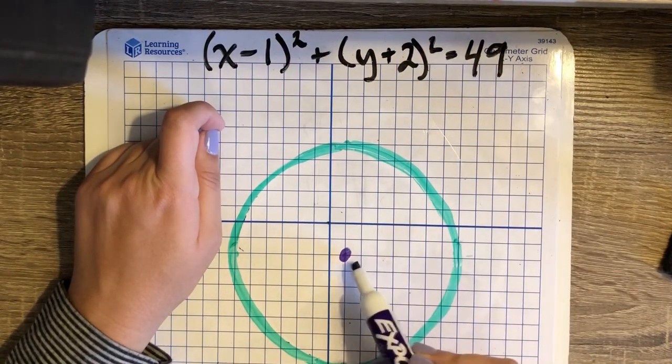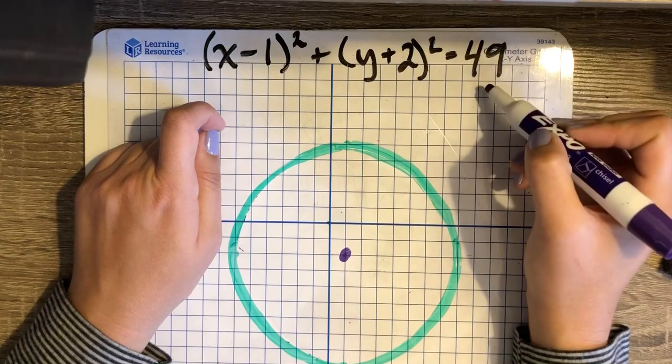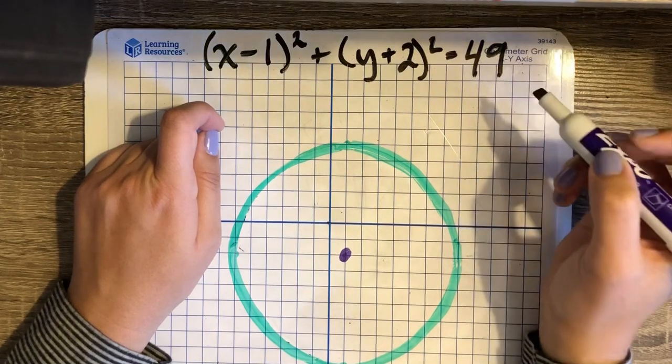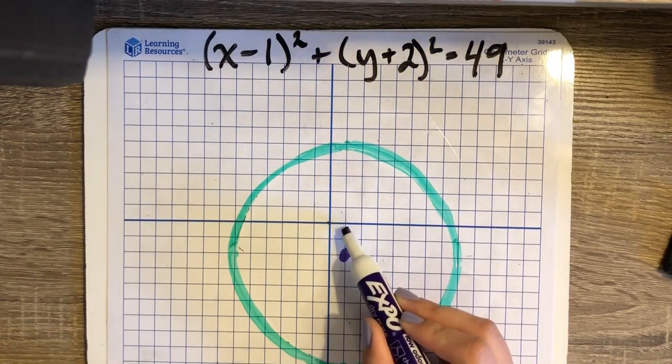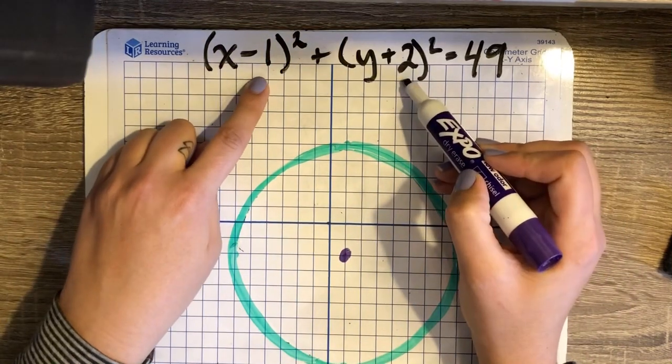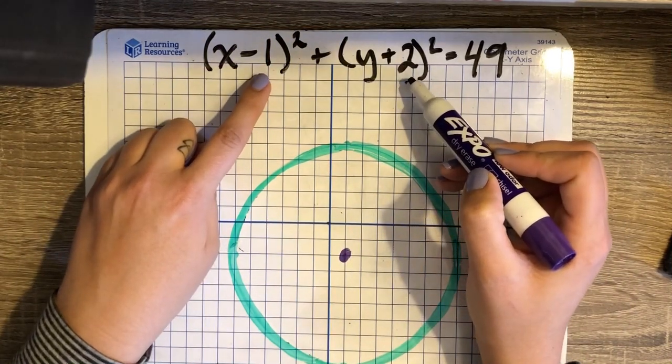So in this circle, the radius is 7. 7 squared is 49. That's where this value comes from. And the center at positive 1, negative 2 fills in to these values inside of the parentheses.